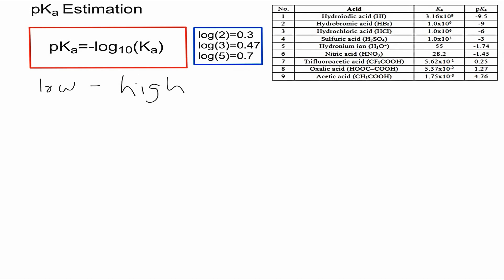We'll go over two different acids. Let's start with acetic acid, which is the last one here. The Ka for acetic acid is 1.75 times 10 to the negative 5. We'll use the formula: the pKa is equal to the negative log base 10 of the Ka, which is 1.75 times 10 to the negative 5.